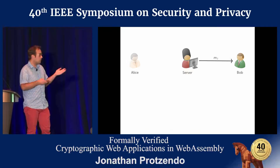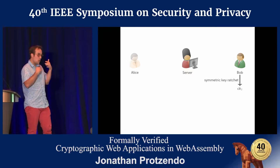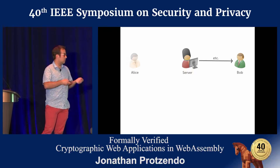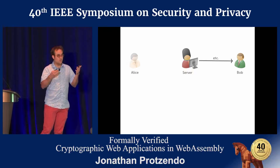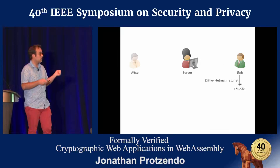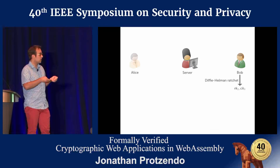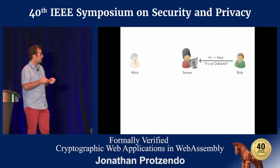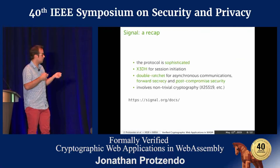Later on, Bob wants to check out what messages are waiting for him on the server. He gets the first message plus Alice's key material, performs the exact same triple Diffie-Hellman followed by a Diffie-Hellman ratchet, and is subsequently able to decrypt the message. Bob also gets the second message, performs the same steps, and is able to decrypt it as well. If Bob wants to send something back, he can do the Diffie-Hellman ratchet to generate a new root key. The chain key gives you forward secrecy, and the root key gives you post-compromised security.